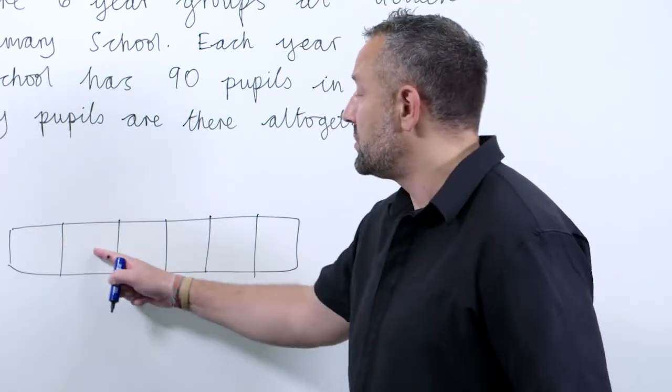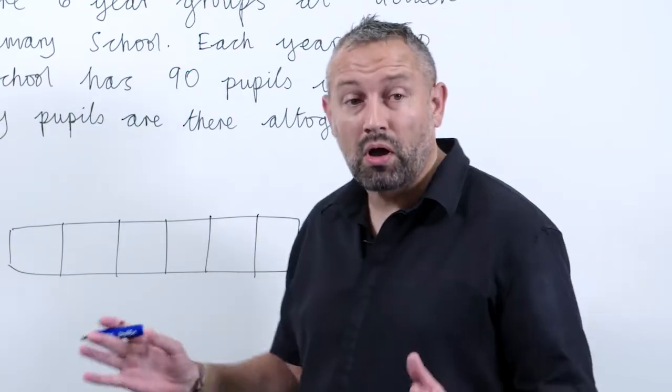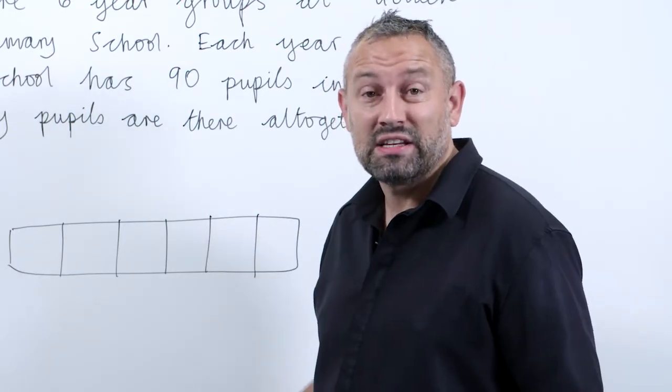And we know that one, two, three, four, five, six, there are six parts to the whole and each part has 90 children in it.